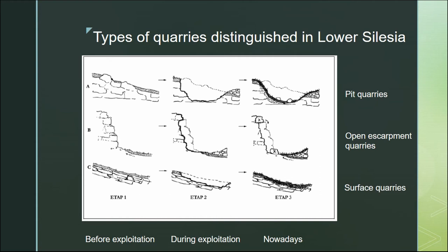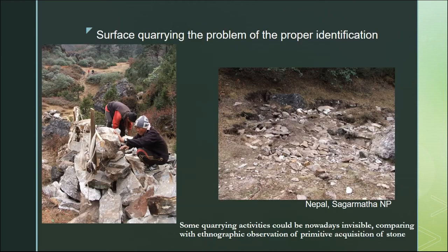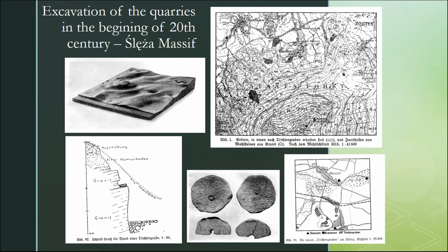The most common are pit quarries; we also have open escarpment quarries. The question of surface quarries remains open because they may now be invisible in the field. Based on ethnographical observations, we think this kind of quarrying also occurred in the Sudete mountains but may no longer be visible. The first research on medieval quarries was conducted in the 1920s and 1930s by German archaeologist Alfred Young, who excavated quarries on the northern slope of the Ślęża Massif.